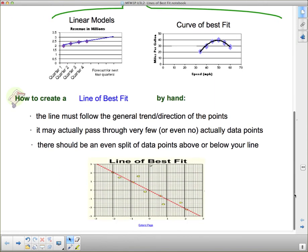So we're going to look at how to create a line of best fit by hand, and I'm going to do it on the next few graphs, and hopefully you can do it, repeat it on your graphs in your note. The line must follow the general trend or direction of the points. It may actually pass through very few or even no actual data points. And there should be an even split of data points above and below the line.